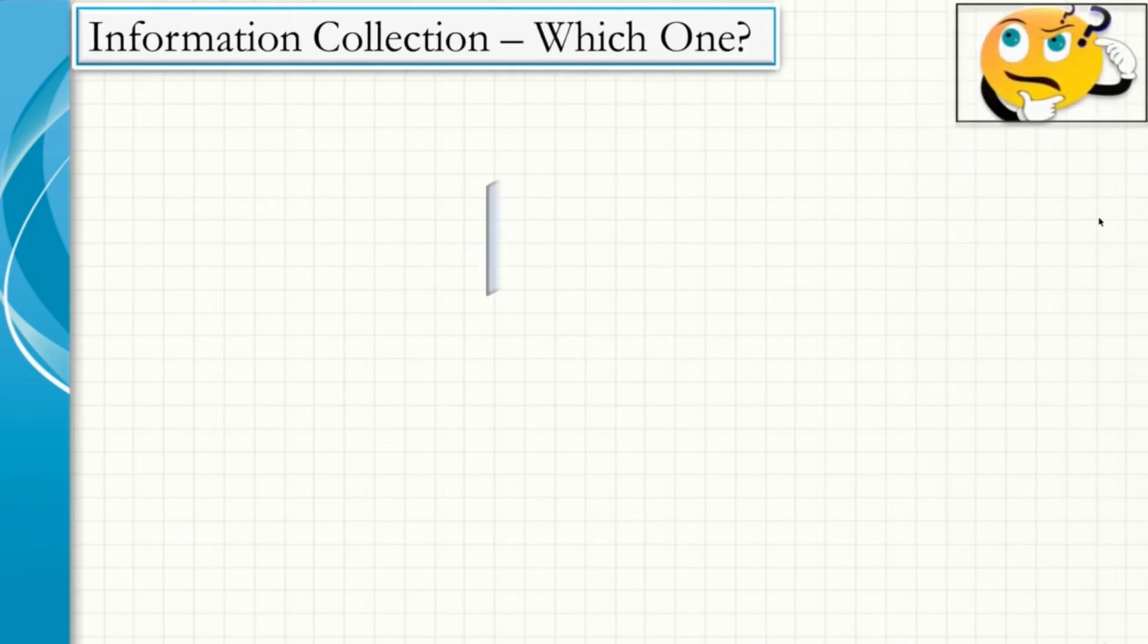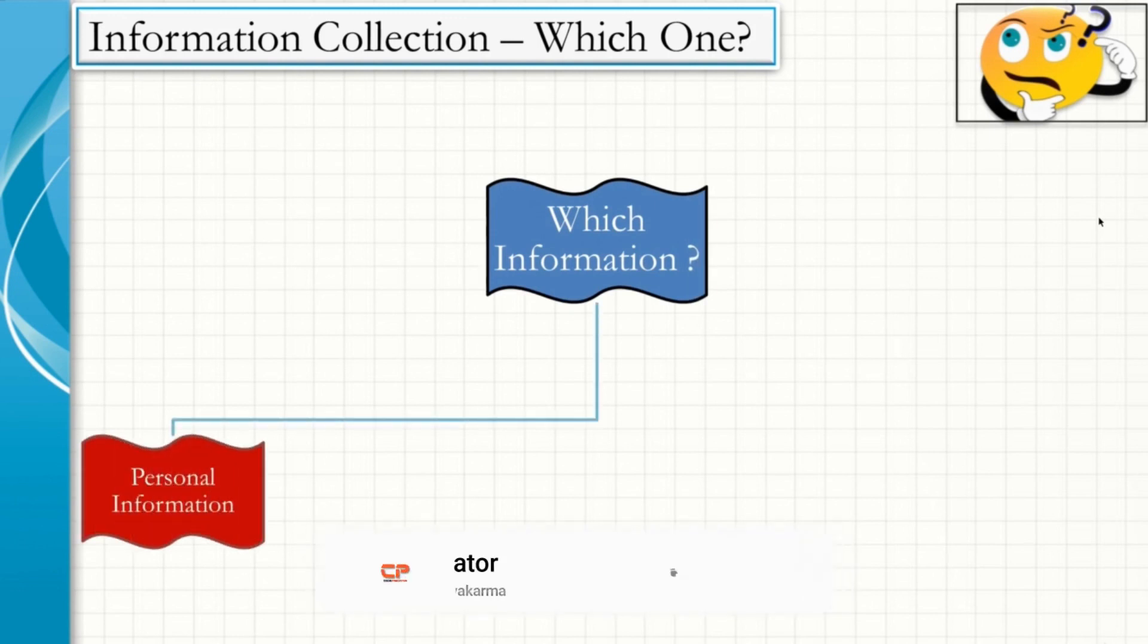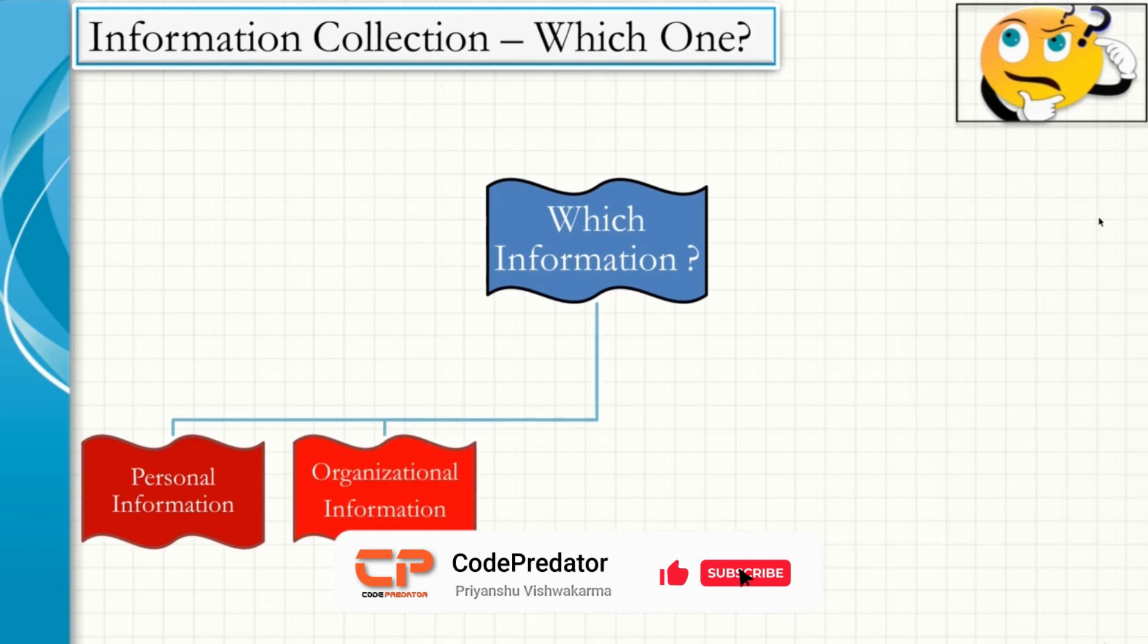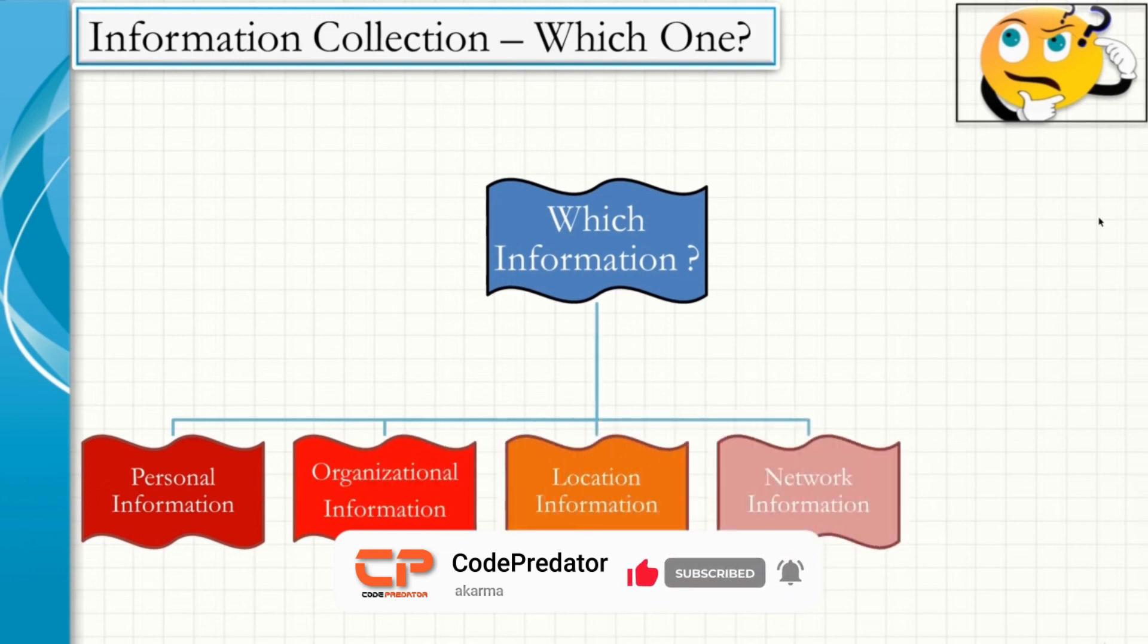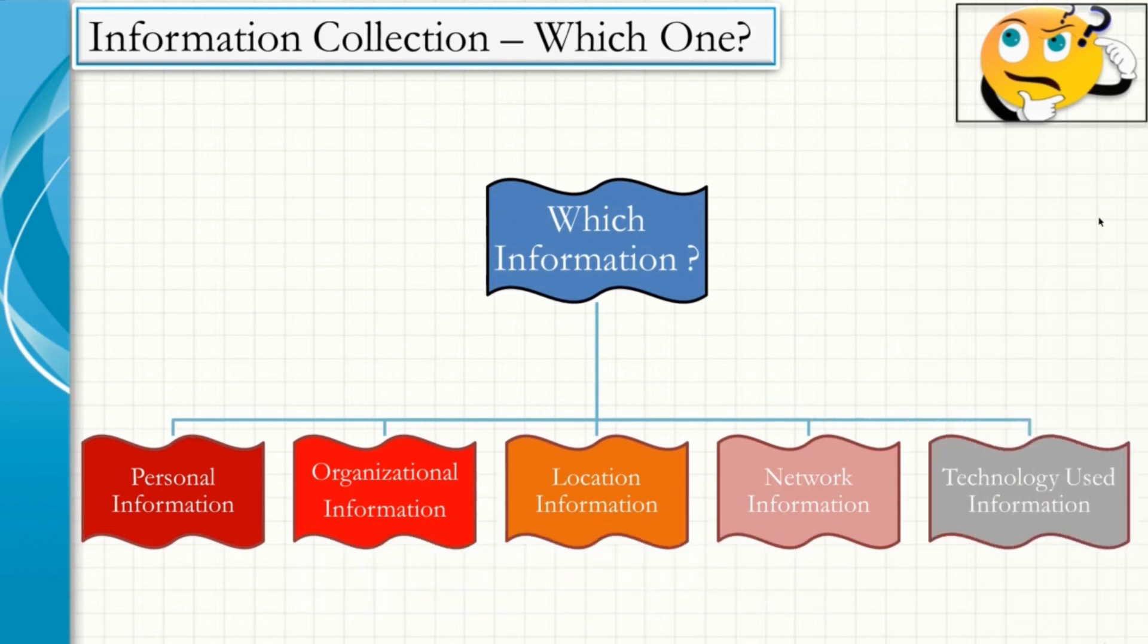Information collection, but which one, which information needs to be collected? Information could be personal information, organizational information, location information, network information, and technology used information.